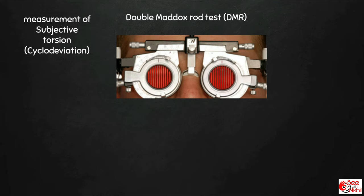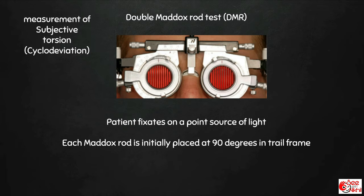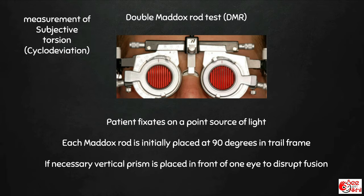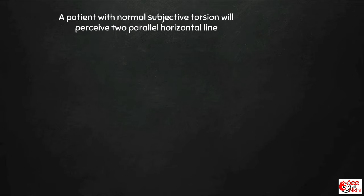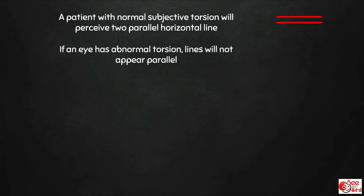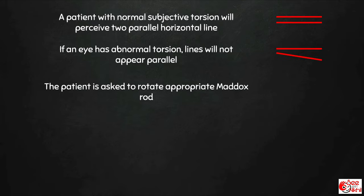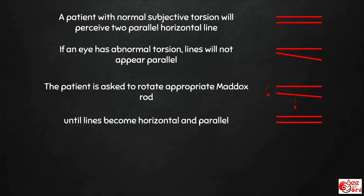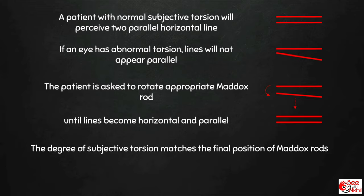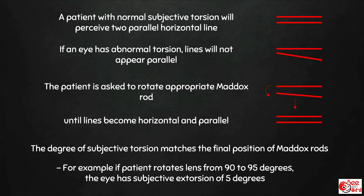Subjective torsion can also be measured using the double Maddox rod test, in which the patient fixes on a point source of light and each Maddox rod is initially placed at 90 degrees in the trial frame. If necessary, a vertical prism is placed in front of one eye to disrupt fusion. A patient with normal subjective torsion will perceive two parallel horizontal lines. If an eye has abnormal torsion, the lines will not be parallel, and the patient is asked to rotate the appropriate Maddox rod until the lines become horizontal and parallel. The degree of subjective torsion matches the final position of the Maddox rod — for example, if a patient rotates the lens from 90 to 95 degrees, the right eye has subjective extorsion of 5 degrees.